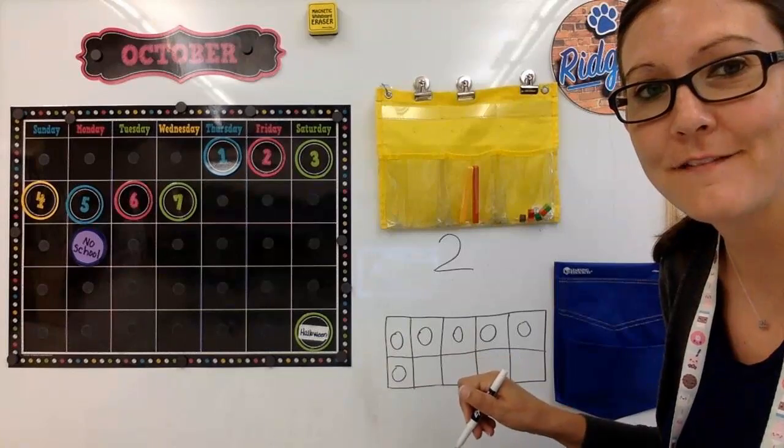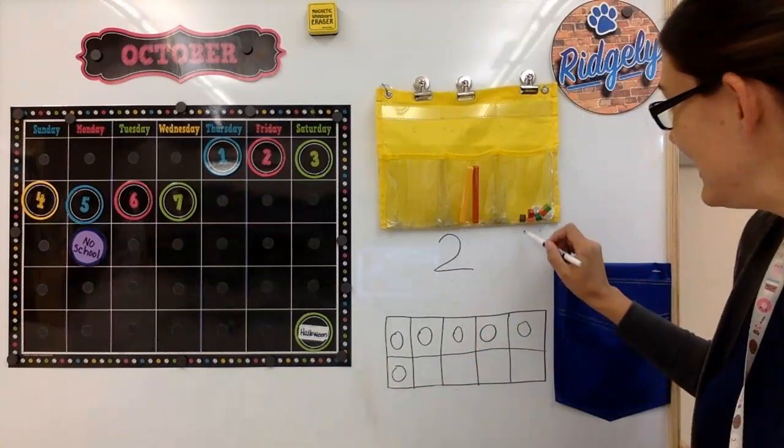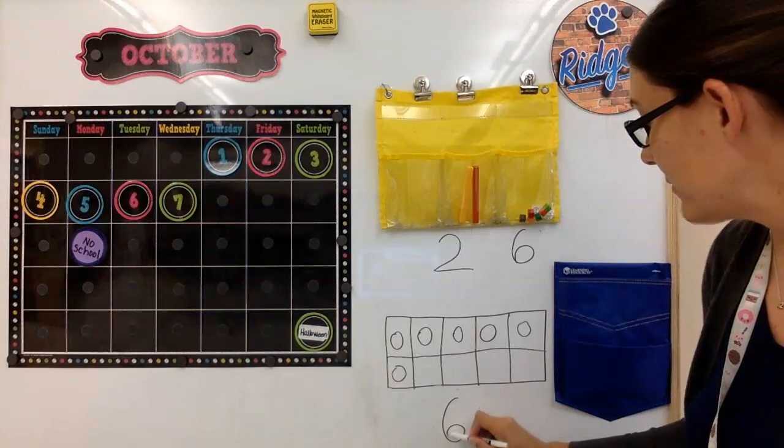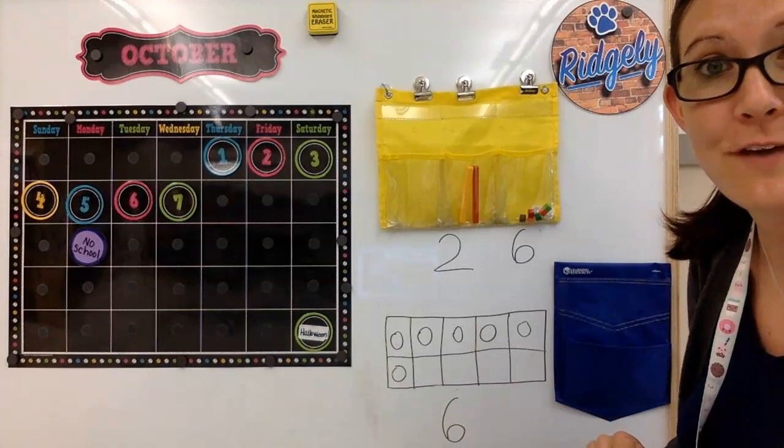One, two, three, four, five, six. The next number is six. I'm going to put a six right there because there's six on our 10 frame now too.